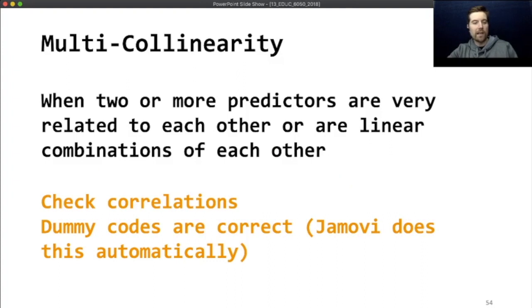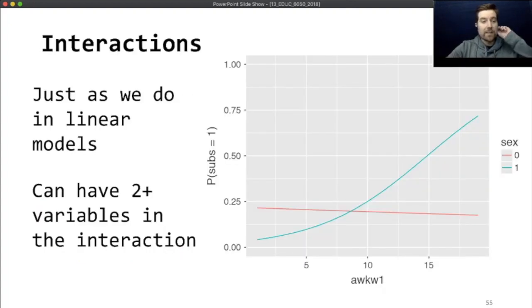When it comes to multi-collinearity, you can check this in Jamovi. As a reminder, collinearity is when two or more predictors are very related to each other or are linear combinations of each other. And so they are so overlapping that the model can't distinguish them.